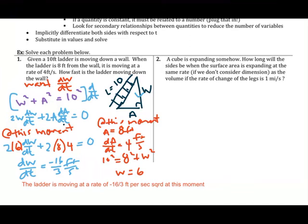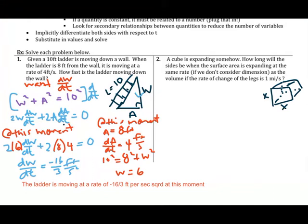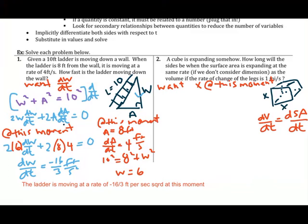Problem 2: a cube is expanding. How long will the sides be when the surface area is expanding at the same rate as the volume, if the rate of change of the sides is 1 meter per second? Draw a picture of the cube and label the sides x, since all sides of a cube are equal. We're given that dV/dt equals dSA/dt at that moment, and dx/dt equals 1.